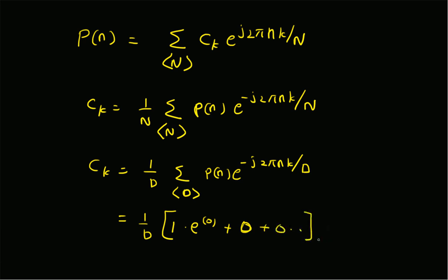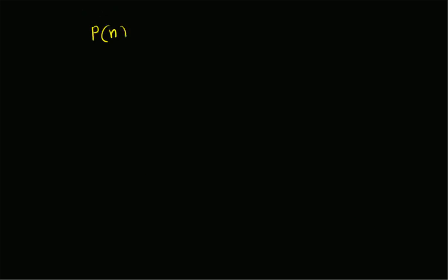Therefore, c_k is simply equal to 1 over d. The discrete time Fourier series of the pulse train p of n is then: p of n equals 1 over d, times the summation over an interval of length d of e to the power j 2 pi n k over capital d. That is the discrete time Fourier series of the pulse train p of n.